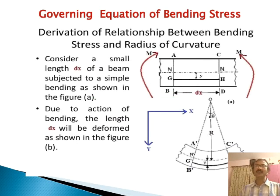If you go to the next diagram, that is the governing equation of bending stress. Derivation of relationship between bending stress and the radius of curvature. Considering a small length dx of the beam, AC is the part of the beam of length dx subjected to bending as shown in figure A. Due to bending, the beam will be deflected as in diagram B. Due to action of bending, the length dx will be deformed and that length will be increased. N is the neutral axis. Neutral axis is the axis which passes through the neutral layer. The neutral layer is the layer which is not subjected to tension or compressive force.